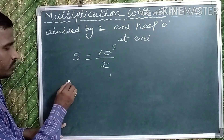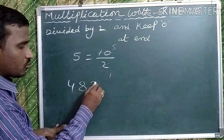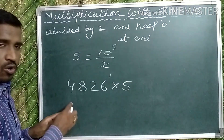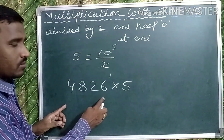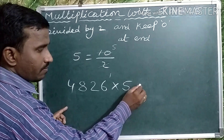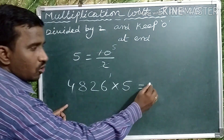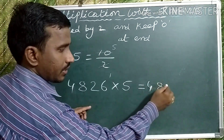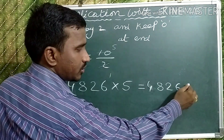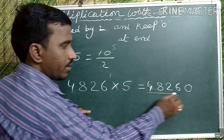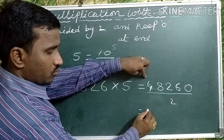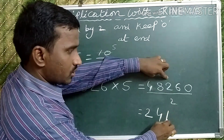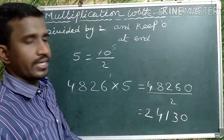Take one example: 4826 multiplied by 5. Keep 0 at the end — so 48260 — and divide by 2. 4 twos are 8, 2 twos are 4, 1 two is 2, 3 twos and 0. That is the answer: 24130.